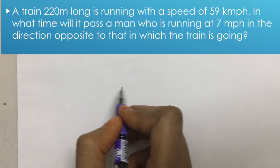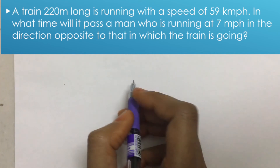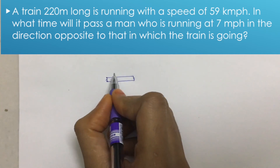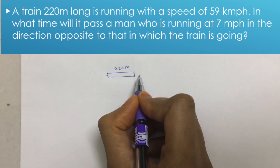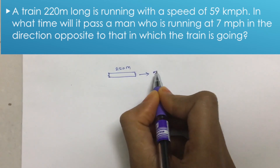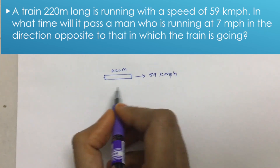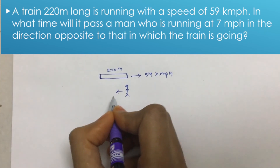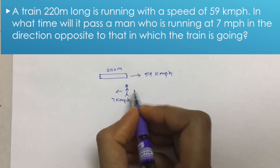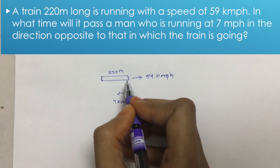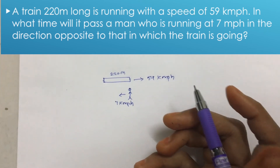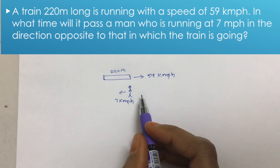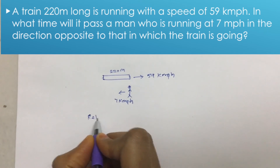In the last question, the train and man were going in the same direction. In this question, they are going in opposite directions. The train length is 220 meters, velocity is 59 kmph, and the man is moving in the opposite direction at 7 kmph. When two objects move in opposite directions, the relative velocity concept applies and the speeds are added.